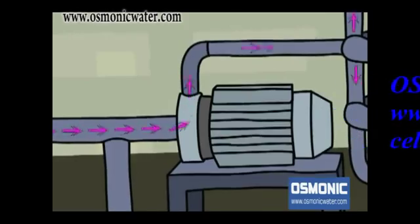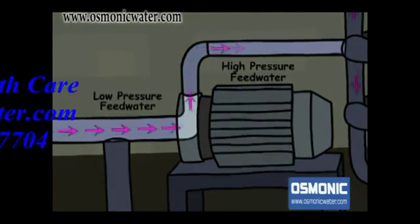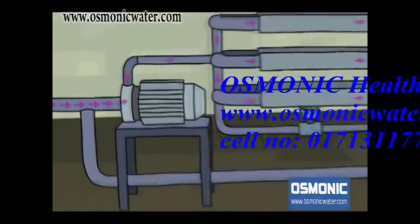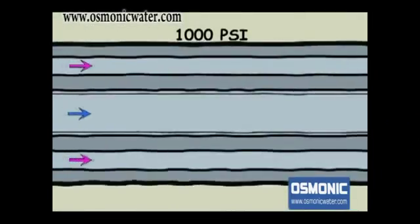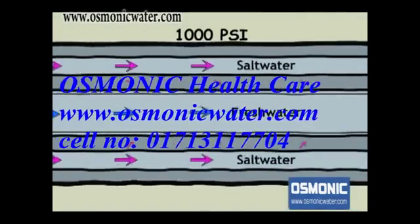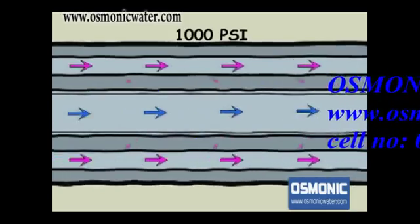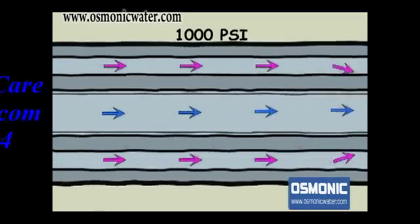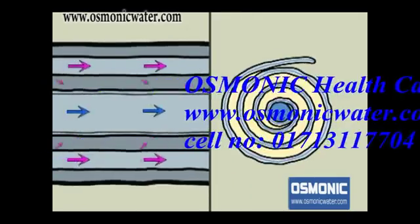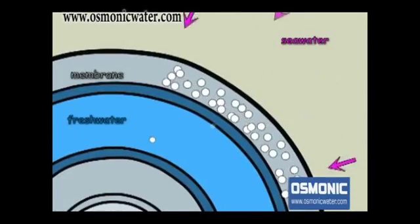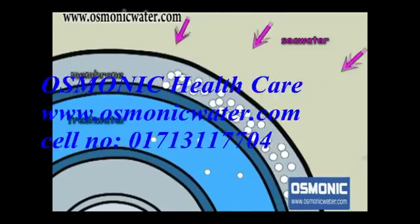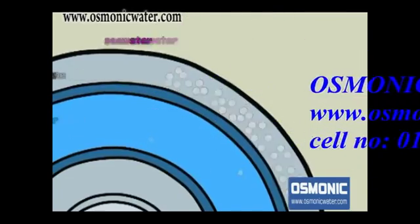High pressure pumps increase the pressure of the seawater up to 1,000 psi. The pressure needs to be sufficiently high to overcome the naturally occurring osmotic pressure and force water from the saltwater side through the reverse osmosis membranes to the freshwater side. The salt particles in the seawater are rejected from passing through the membrane to the freshwater side and remain behind on the concentrated saltwater side.